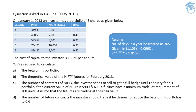Number two, we are supposed to provide them the theoretical value of the nifty futures for February 2013. Number three, what should be the number of contracts of nifty the investor needs to sell in order to get a full hedge until February for his portfolio if the current value of nifty is 5900, and nifty futures have a minimum trade lot requirement of 200 units. And lastly, the number of future contracts the investor should trade if he desires to reduce the beta of his portfolio to 0.6.